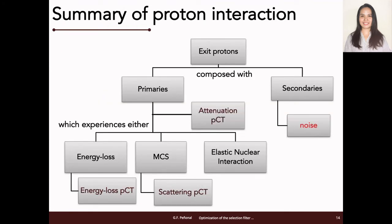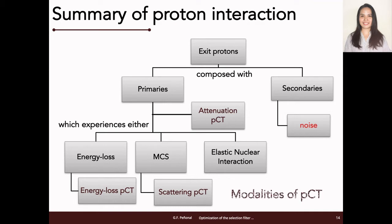As a summary, the outgoing protons are mainly composed of the unattenuated outgoing primary protons and the by-produced secondary particles, where these secondary particles are deemed unnecessary for the reconstruction. We focus our attention on the outgoing primaries, where we can have attenuation measurements — hence attenuation proton CT. These outgoing primaries exit matter after experiencing energy loss — hence energy loss proton CT — small-angle scattering — hence scattering proton CT — and after elastic nuclear interactions. This gives us the three imaging modalities of proton CT.